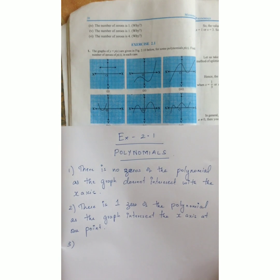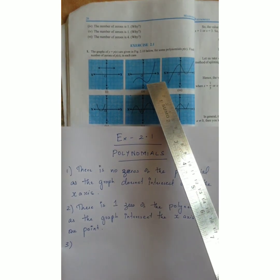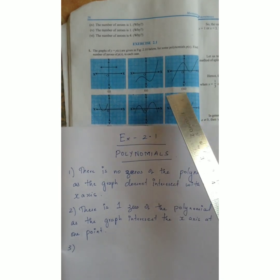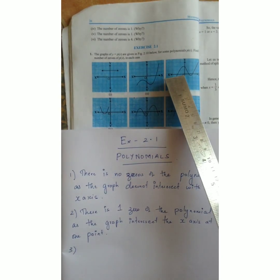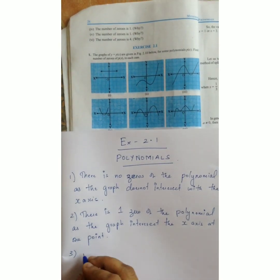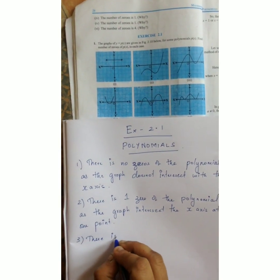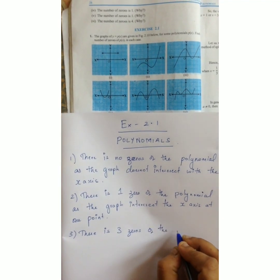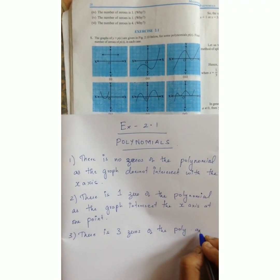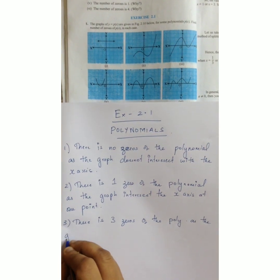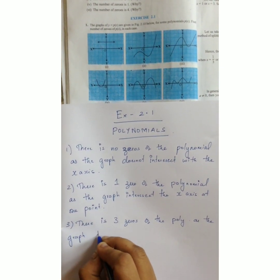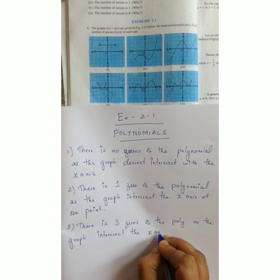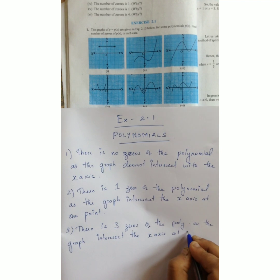In the third sum, the graph intersects the x-axis at one, two and three. So there are three zeros of the polynomial, as the graph intersects the x-axis at three points.